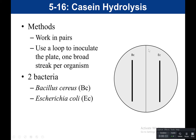On the bottom side of the skim milk agar plate, draw a line to divide it in half. Label one side BC (for B. cereus) and the other side EC (for E. coli). Using aseptic technique with a loop, make one broad streak of B. cereus, flame your loop, let it cool, then make one broad streak of E. coli. Put the plate in the incubator agar side up. This setup is very similar to the starch hydrolysis test.